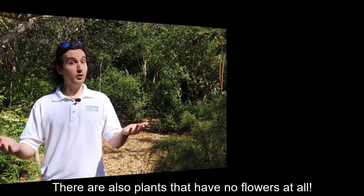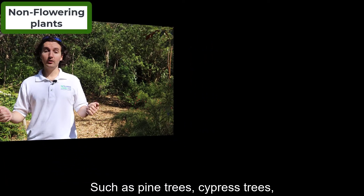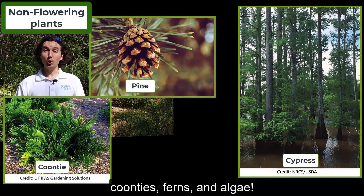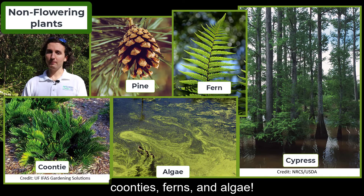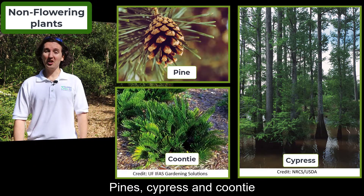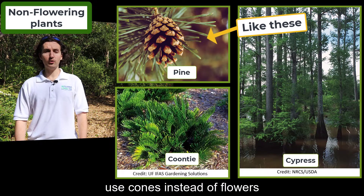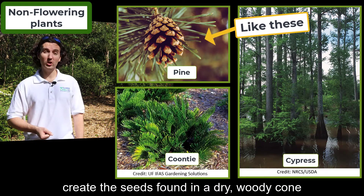There are also plants that have no flowers at all, such as pine trees, cypress trees, coonties, ferns, and algae. Pines, cypress, and coonti use cones instead of flowers — the cones will be pollinated and create the seeds found in a dry, woody cone.